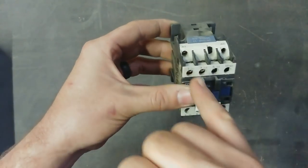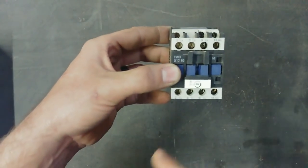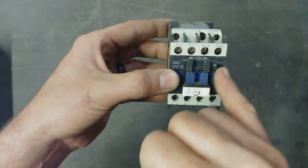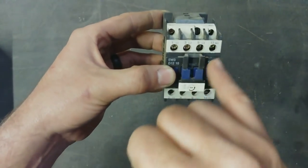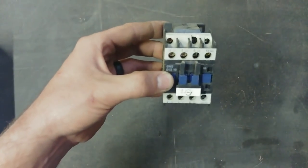And then these are the 4 contacts: 1, 3, 5, and 13 on there. It's actually all normally open. You can get one that is normally closed at the end or you can get an extension block on there if you need any more connections.